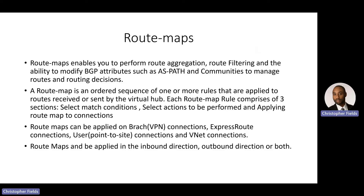RouteMaps enables you to do this in three easy steps. The first is to select the routes you'd like to modify — in this case, we use match conditions. Next, you select the actions you would like to perform: would you like to summarize these routes, or would you like to change your AS path? And the last step is applying a route map to a connection.